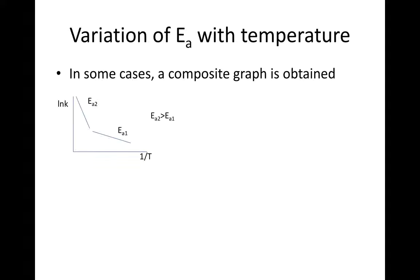In such a situation, the composite graph would look like the one we have here. Again it's natural log of K against 1 over T. We will have an Ea1 here and an Ea2 here, where of course here it means Ea2 is greater than Ea1.